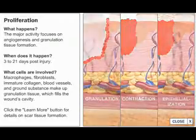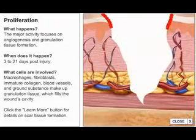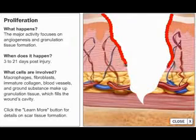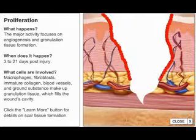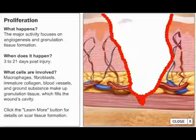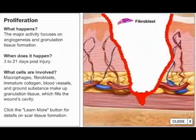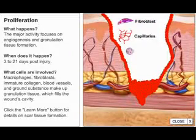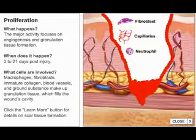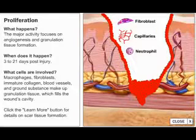In an open wound, granulation tissue is generated, producing red, beefy, shiny tissue with a granular appearance. This tissue consists of fibroblasts, capillaries, and neutrophils. As this type of tissue proliferates, fibroblasts stimulate the production of collagen, which gives tissue its tensile strength and structure.